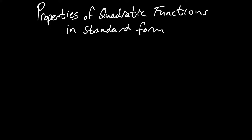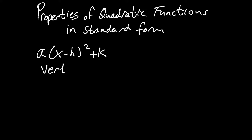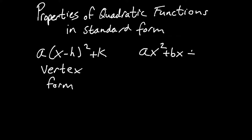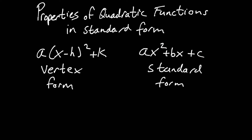In this video, we're going to talk about some properties of quadratic functions when in standard form. In the previous video, we talked about vertex form, which was a times x minus h squared plus k. For more information on how vertex form works, please check out my other video. But in this video, we're going to focus on standard form, which is ax squared plus bx plus c. There is still some good information we can get out of ax squared plus bx plus c.